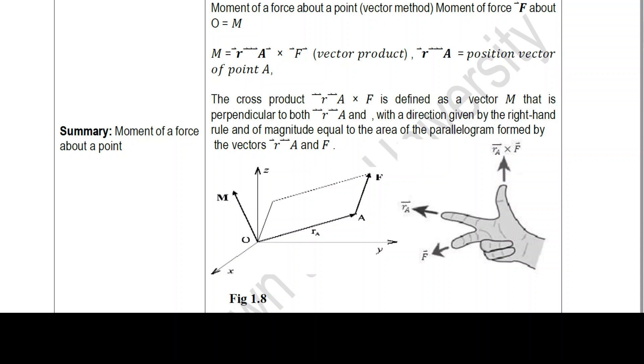Let us discuss about moment of force about a point. So the moment of force about a point O is denoted by M. Now M is equal to R into A into F, this is the vector product. Now if you see here, R into A is the position vector of point A.